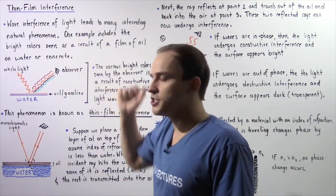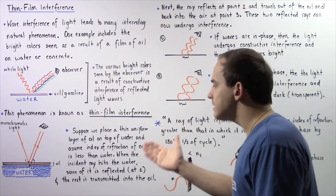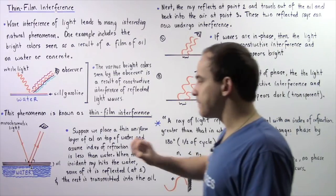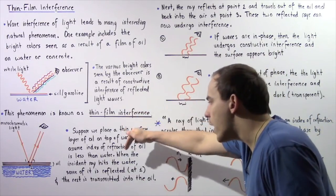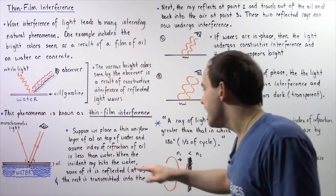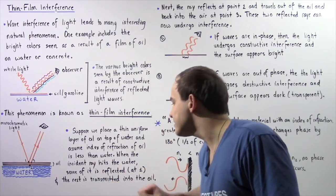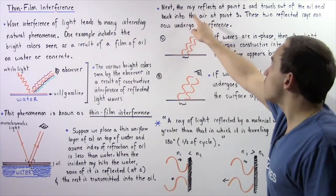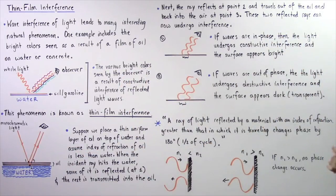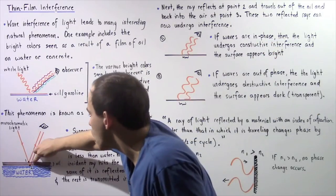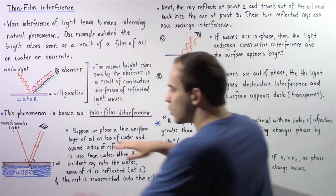This is known as thin film interference. Suppose we place a thin uniform layer of oil or gasoline on top of water and assume that the index of refraction of the oil is less than that of water — we'll see why that's important in a moment. When the incident ray of light hits the surface, some of it is reflected at point one and the rest is transmitted into the oil. The transmitted ray then reflects at point two and travels out of the oil and back into the air at point three. These two reflected rays can now undergo interference.